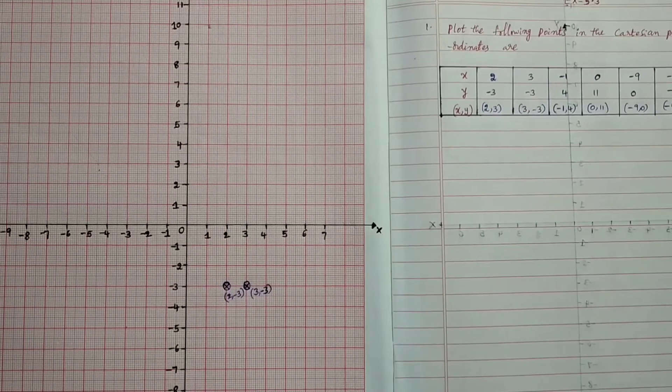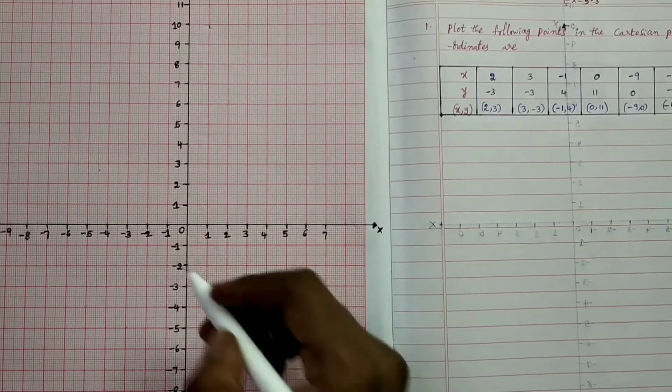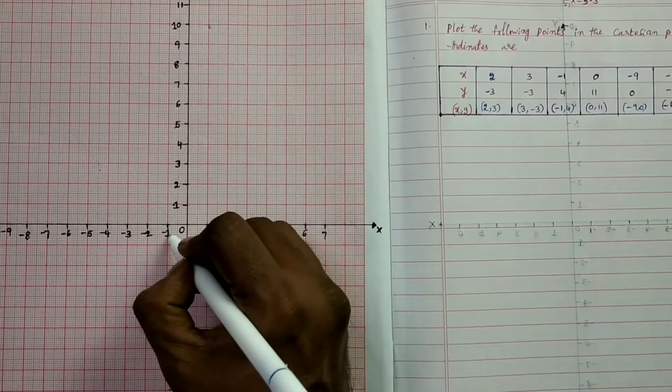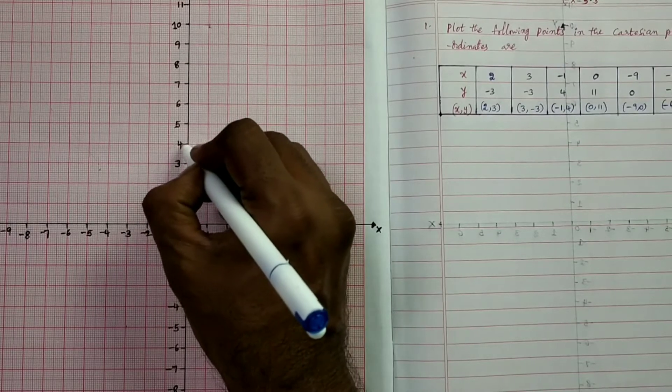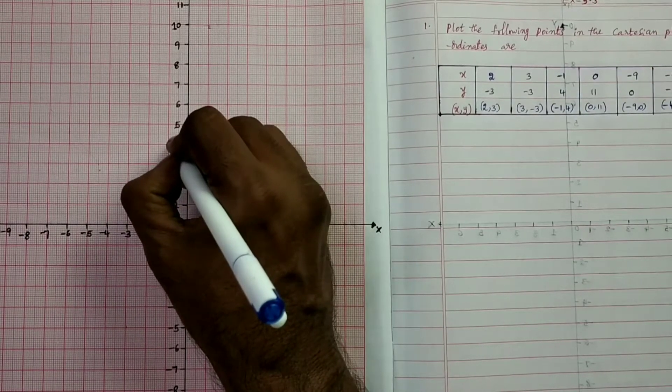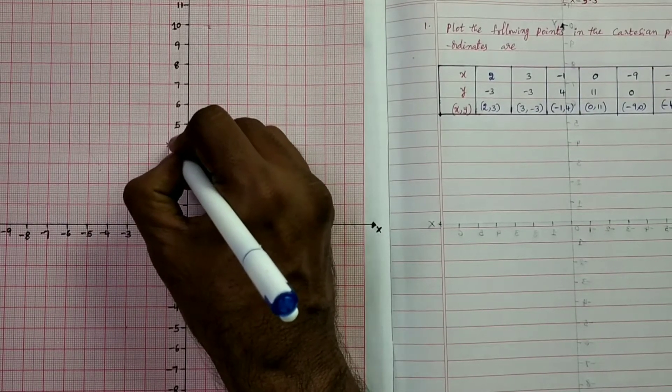The next point is (-1, 4). So on x-axis is minus 1 and y-axis is 4. So this is (-1, 4).